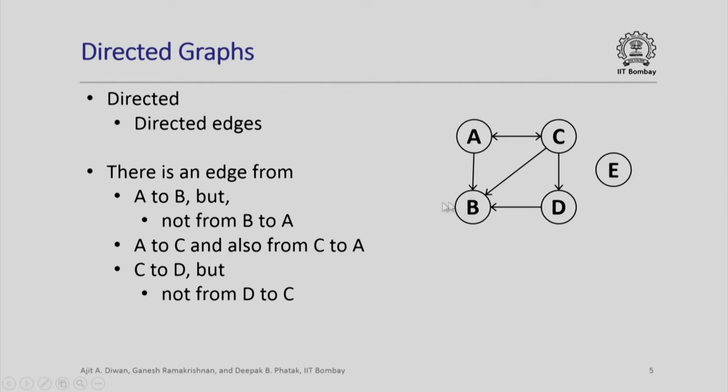On the other hand, if you see this edge, this edge actually indicates a directed edge from A to C and a directed edge from C to A as well. There is similarly an edge from C to D, but there is no edge from D to C. So, these are called directed graphs.